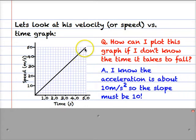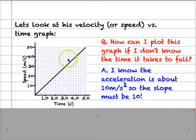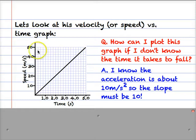I know the acceleration is about 10 meters per second squared, and I know that the slope of a speed-time graph is indeed the acceleration. So I must draw this line with a slope of 10, and if you look carefully you can see that I've done that. Rise over run all the way to the end: rise is 50, run is 5, 50 over 5 is 10.